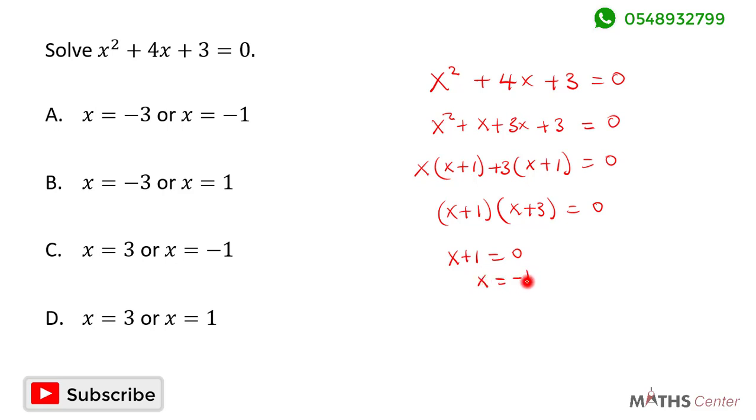We do the same thing for the second bracket. We have x plus 3, so you equate that to zero, and this gives us x equals negative 3. When we look through the options, we can see that the correct option is A.